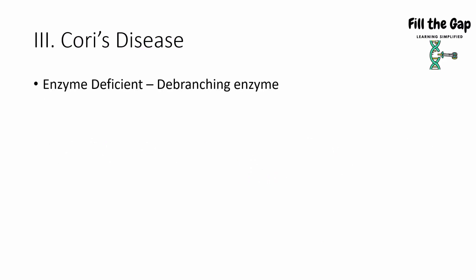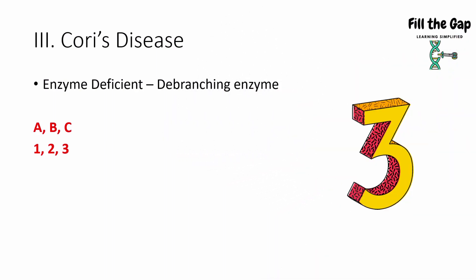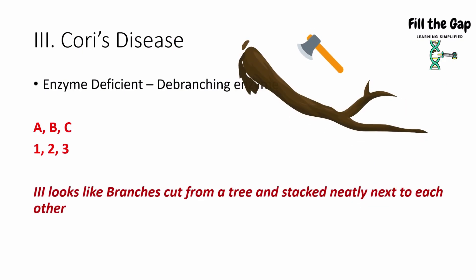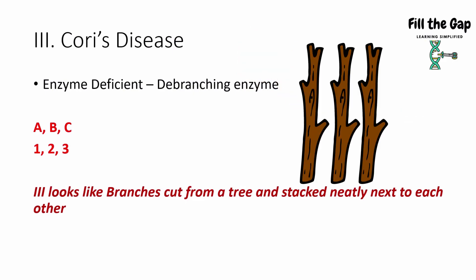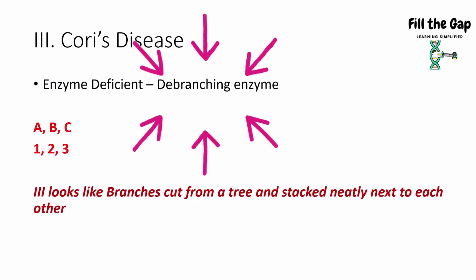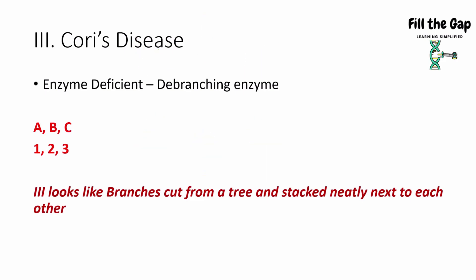Next is Cori's disease. The enzyme deficient is the debranching enzyme. If we number the alphabets — A=1, B=2, C=3 — C gets number 3, helping you remember Cori's disease is the third. The Roman numeral III looks like branches cut from a tree and stacked neatly, and debranching means cutting branches, helping you remember the deficient enzyme is the debranching enzyme.